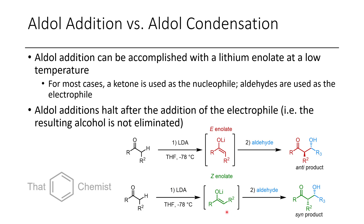Alternatively, we could form the Z enolate. When doing these reactions with LDA, you'll actually preferentially form the Z enolate most of the time, though this can be somewhat substrate-dependent. For instance, if R2 and R were connected in a ring system, you could only form the E enolate, because you'd have to contort the ring to some crazy angle to form the Z enolate. If the Z enolate reacts with the aldehyde, we get the syn product. We'd still have the mirror image as well, since this is an achiral base with achiral substrates.